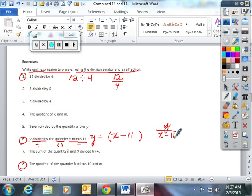Then that last one, the quotient, which is the answer to a division problem, of the quantity k minus 10 and m. So I'm going to take the quantity, k minus 10, and I'm going to divide it by m. And that would make k minus 10 my numerator and m my denominator.